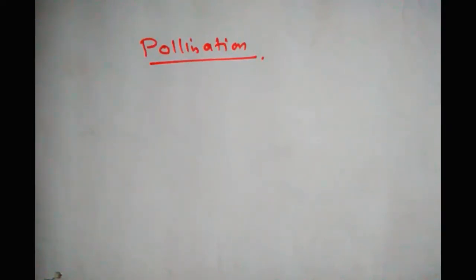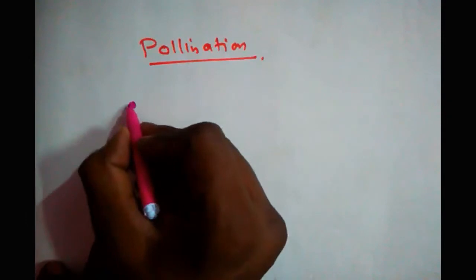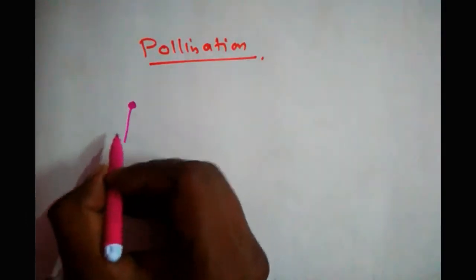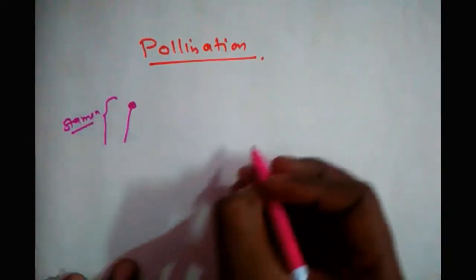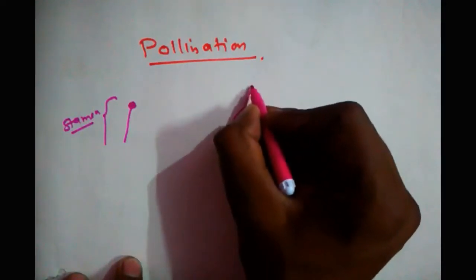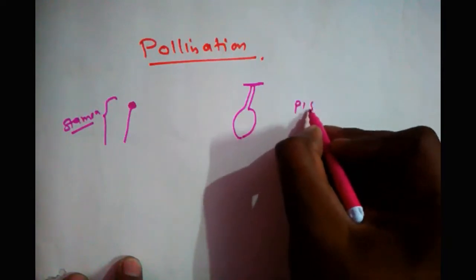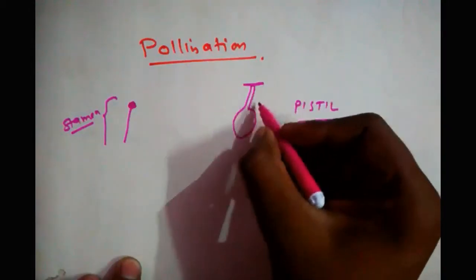Friends, as all of you know, the male part of the plant is known as the anther. The part of the plant which contains pollen is the anther. The filament and the overall part is known as the stamen. Stamen is the male part of the plant.